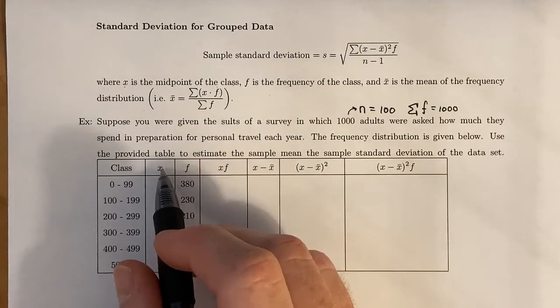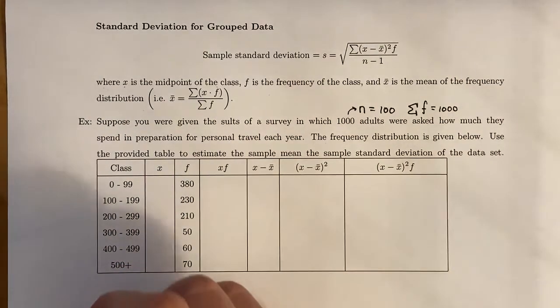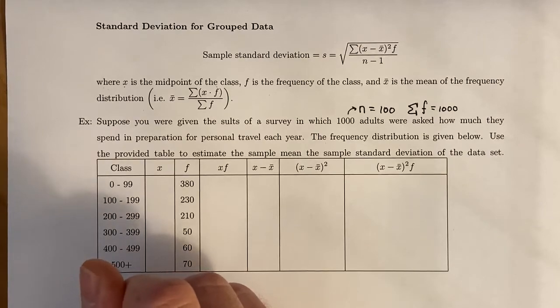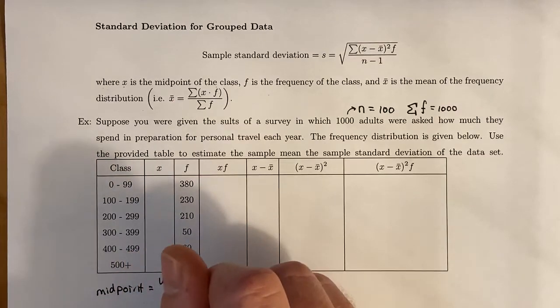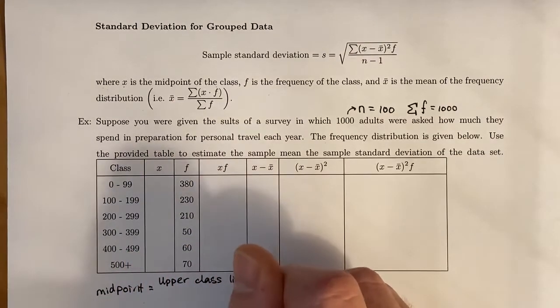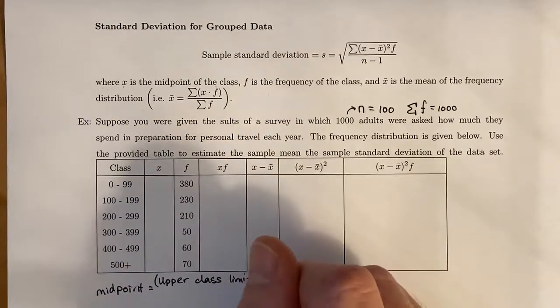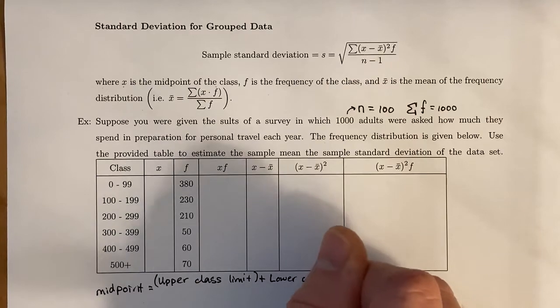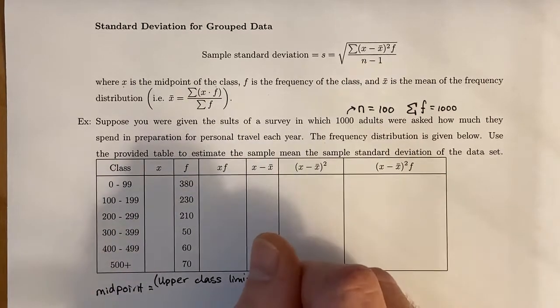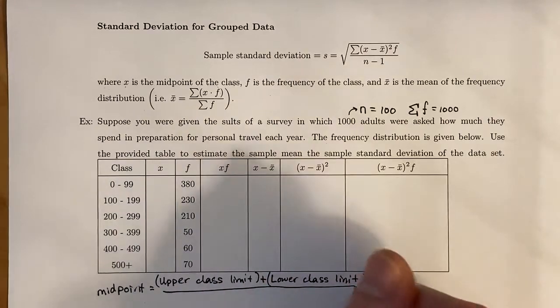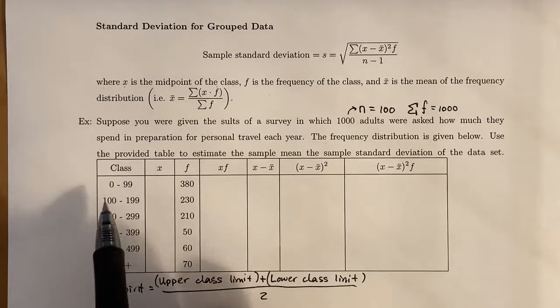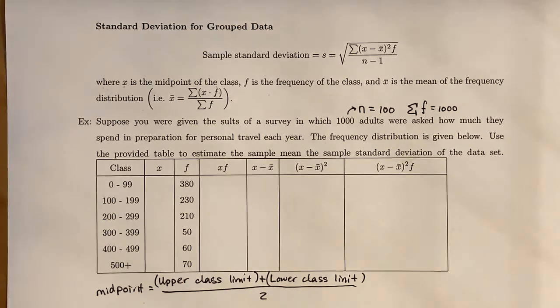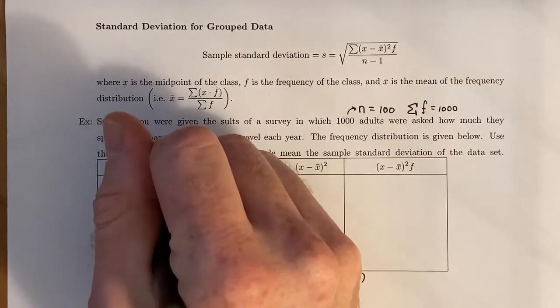First we have to find the midpoint. The midpoint equals the upper class limit plus the lower class limit divided by 2. For this first one, we take 99 plus 0, which gives us 99, and divide that by 2. The midpoint is 49.5.